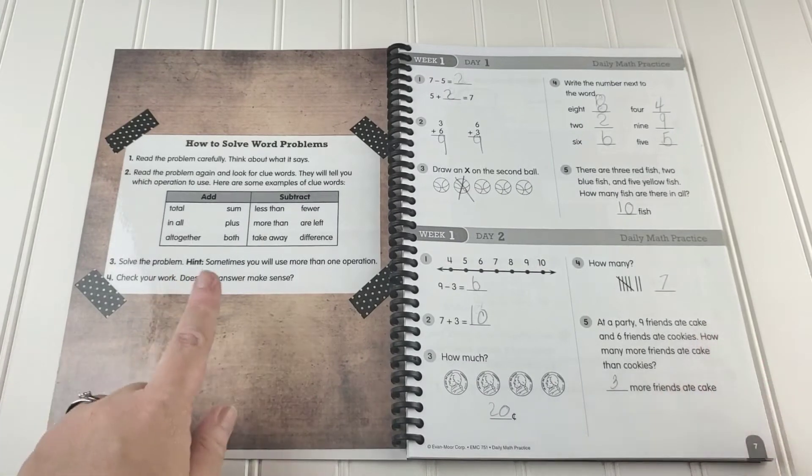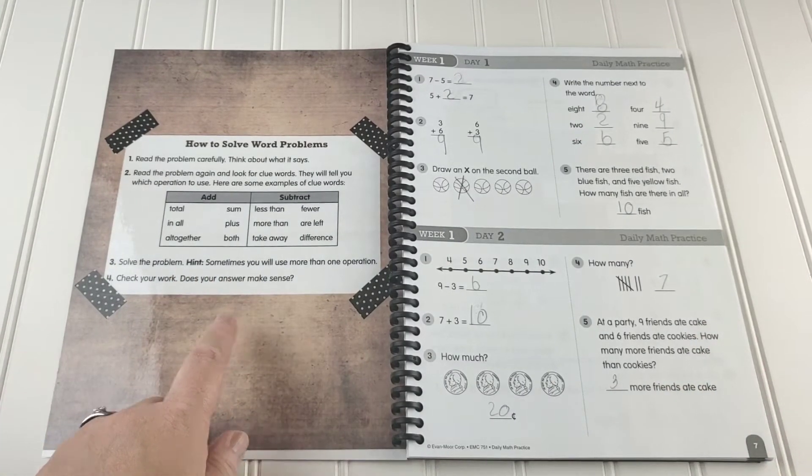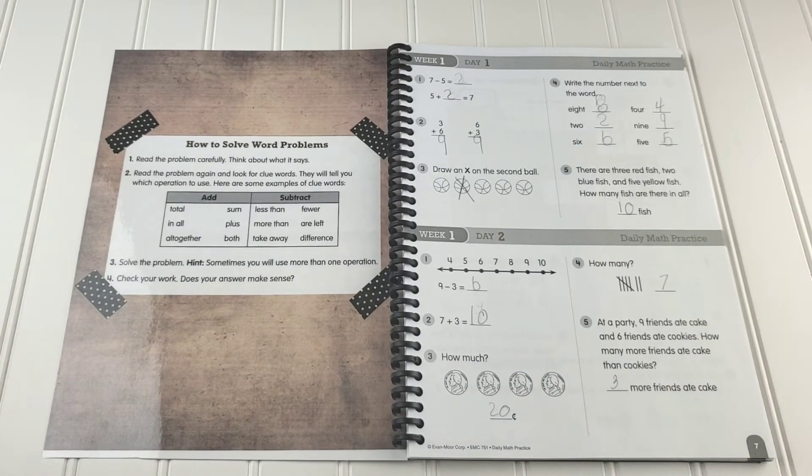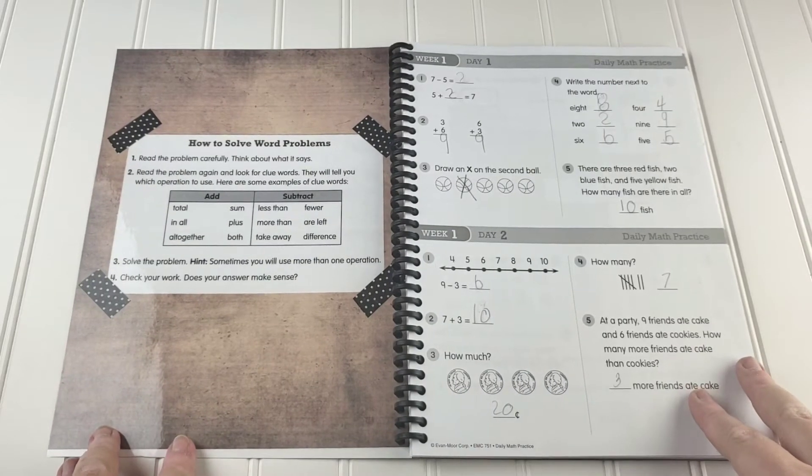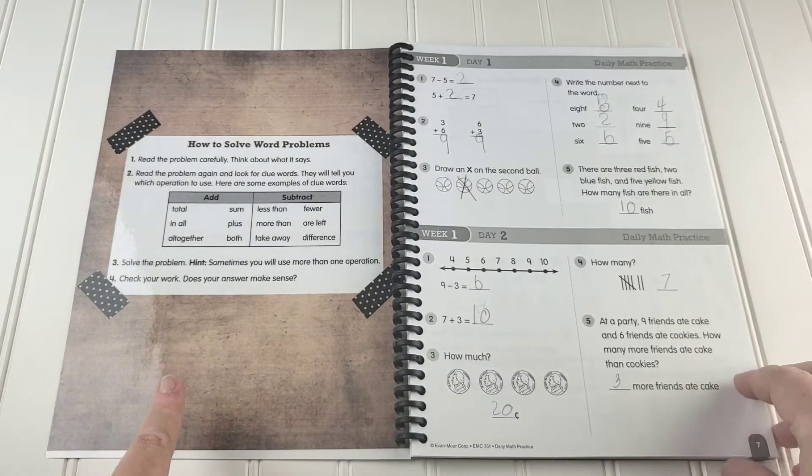Now the book did have this really awesome How to Solve Word Problems printable. So I used washi tape to tape that into her front cover right there so she would have access to it all year long.